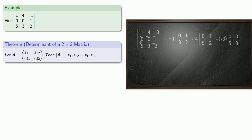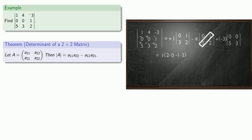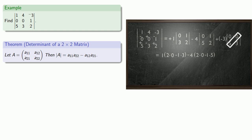For our first determinant, we find the product of 0 and 2, and subtract the product of 1 and 3. For our second determinant, we multiply 0 and 2, and subtract the product of 1 and 5. And for our last determinant, we multiply 0 and 3, and subtract 0 times 5. Then we evaluate the full arithmetic expression.